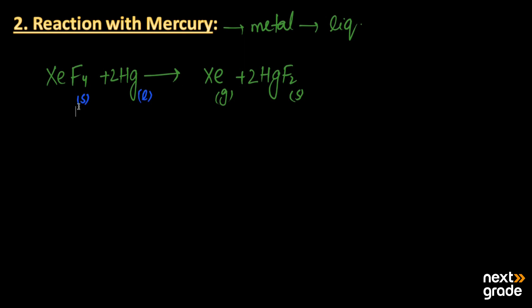Xenon tetrafluoride, which is in the solid state, acts as a good fluorinating agent — it provides fluoride and can be used to prepare metal fluorides through simple chemical reactions. This is the reaction of mercury with xenon tetrafluoride.